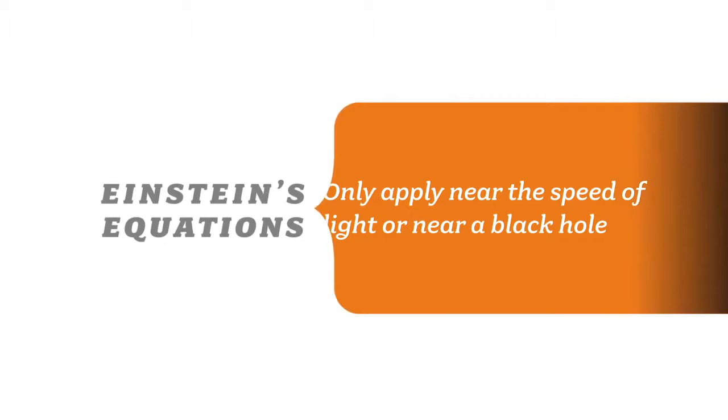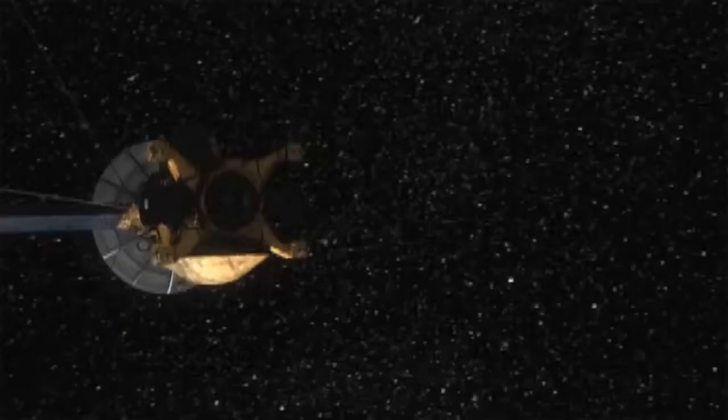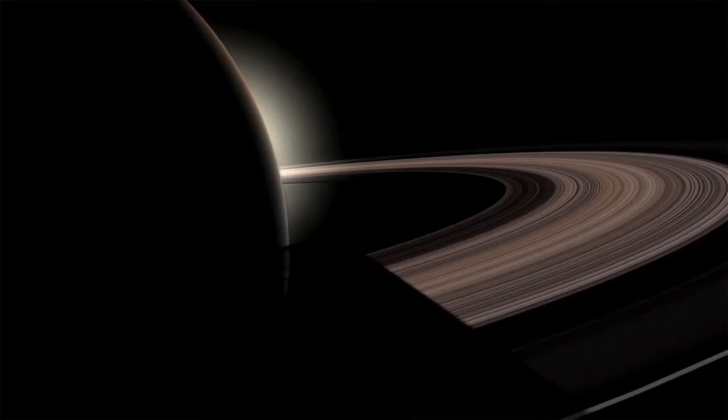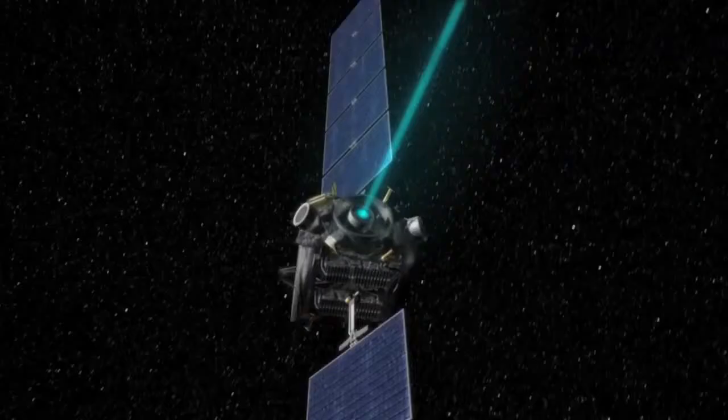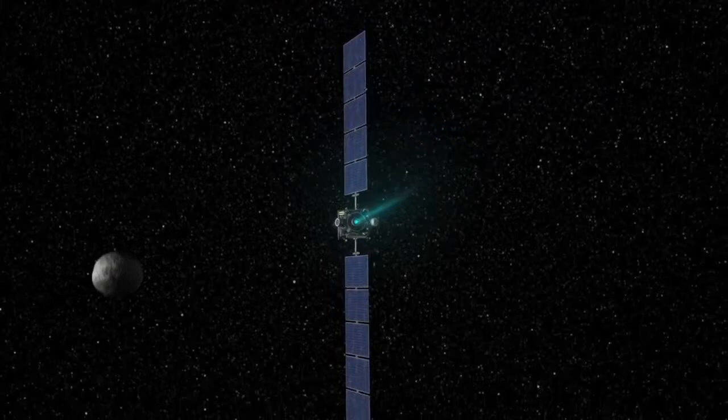In fact, even today, when we launch our space probes, we don't use Einstein's equations. They only apply when you get near the speed of light or near a black hole. We use Newton's laws of gravity. They are so precise that when we shoot a space probe right past the rings of Saturn, we use exactly the same equations that Isaac Newton unraveled in the 1600s. That's why we've been able to unravel the secrets of the solar system, complements of the laws of motion of Isaac Newton.